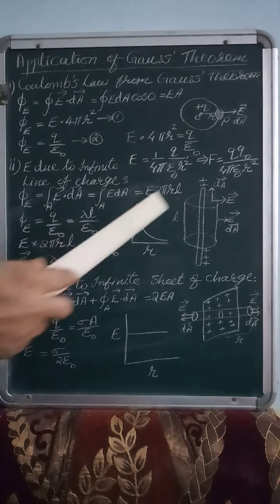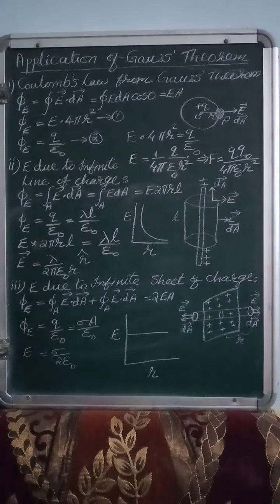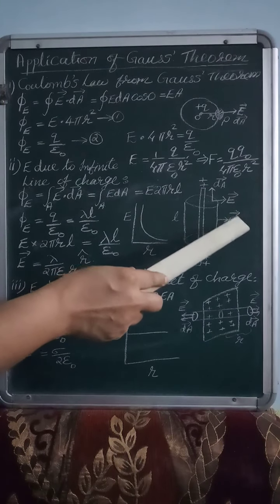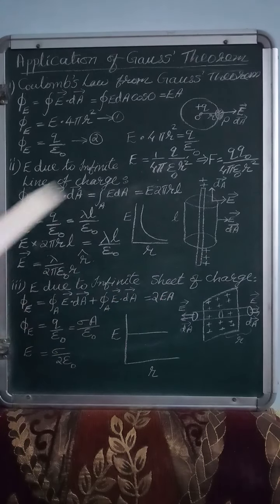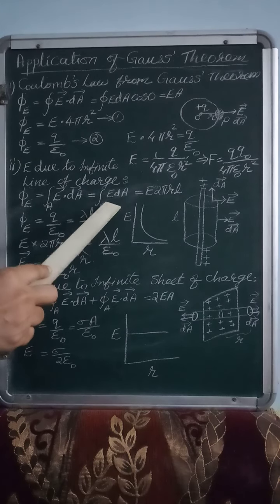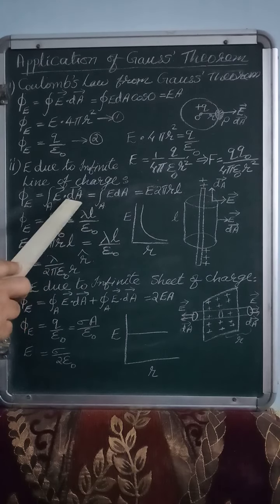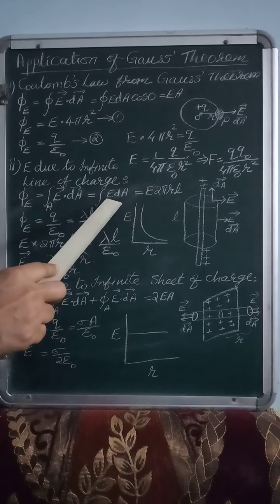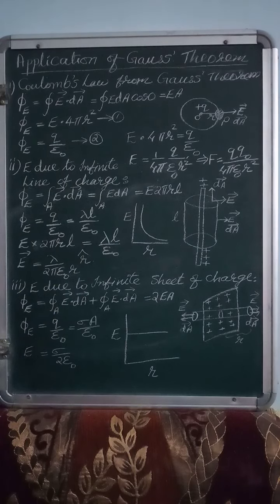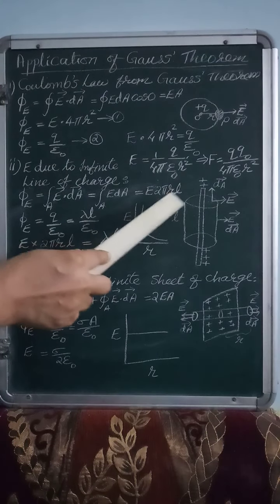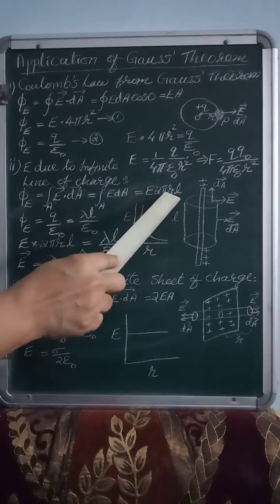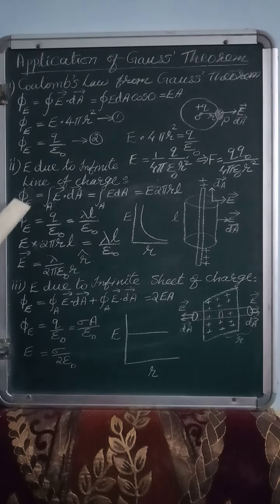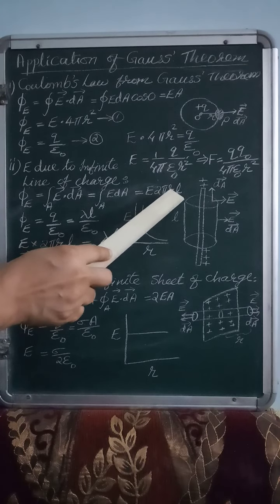The next one is the curved surface. On the curved surface, the electric field vector and the area vector are parallel, meaning theta = 0. Since cos 0° = 1, the flux formula ∫E·dA gives ∫E dA = E·A. The area of the curved surface is 2πRL. Thus we get the electric flux Φ_E = E·2πRL.